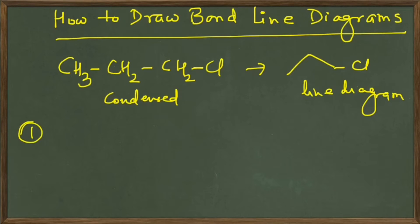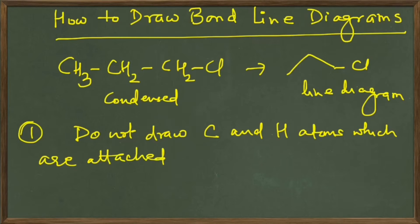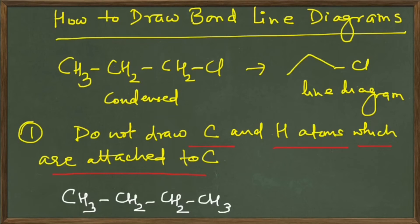The first rule is: when drawing bond line diagrams, you do not draw carbon and hydrogen atoms which are attached to carbon. What this means is that you will not draw the carbon atoms, and you will also not draw those hydrogen atoms which are attached to carbon atoms. For example, if we take a structure like CH3 CH2 CH2 CH2 CH3, because this formula contains only carbon and hydrogen atoms, we will not draw these atoms.